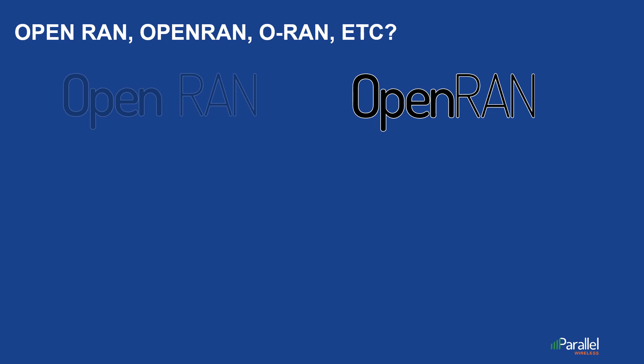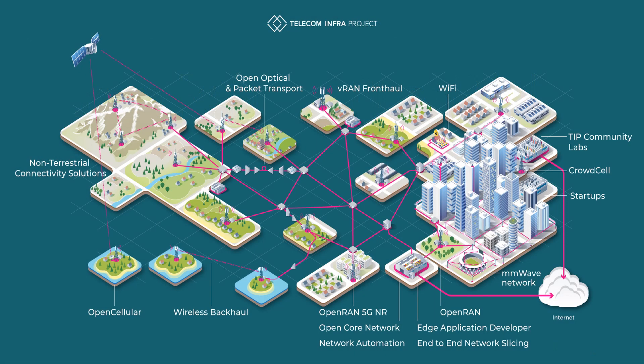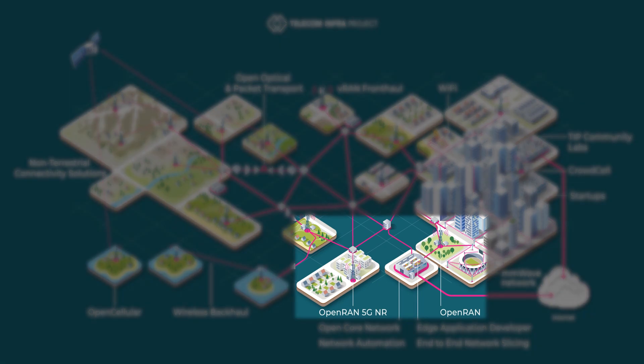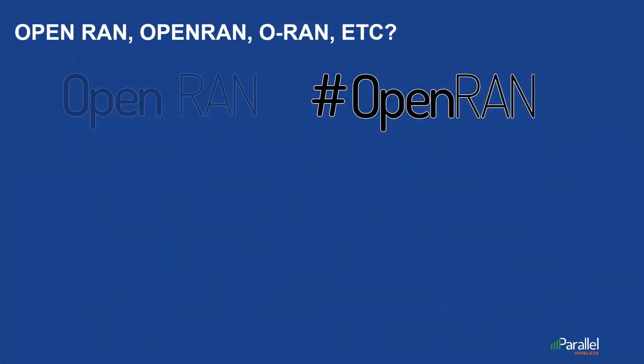When you see OPENRAN without the space, it could mean two different things. It could either refer to the Telecom InfraProject OPENRAN group. There are two groups in the Telecom InfraProject, or TIP. The OPENRAN project group is an initiative to define and build 2G, 3G, and 4G RAN solutions based on general purpose, vendor-neutral hardware and software-defined technology. The OPENRAN 5G NR project group focuses on 5G NR, or new radio. The other time you'll typically see OPENRAN as one word is when it is used as a hashtag on social media like Twitter, LinkedIn, or Facebook.